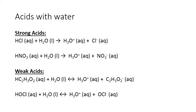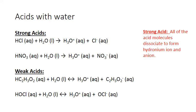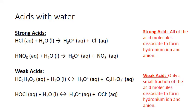All acids react with water in this way. Whether the acid is considered strong or weak, it releases hydrogen ions in solution that combine with a water molecule and produce hydronium ion, leaving behind an anion formed from the remainder of the acid molecule. The difference between strong and weak acids is that strong acids react completely with water to produce lots of hydronium ions and the appropriate anion. Weak acids, on the other hand, have only a small fraction of their molecules dissociate to produce hydrogen ions, resulting in a lot less hydronium produced per unit of acid dissolved. That's why they're considered weak.